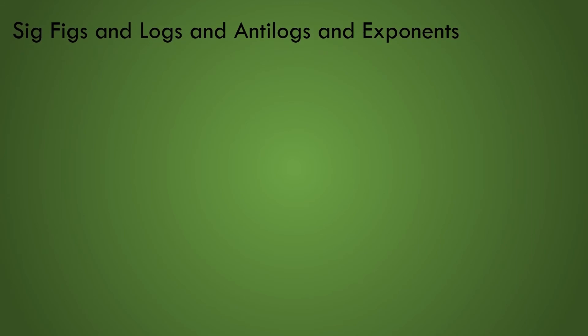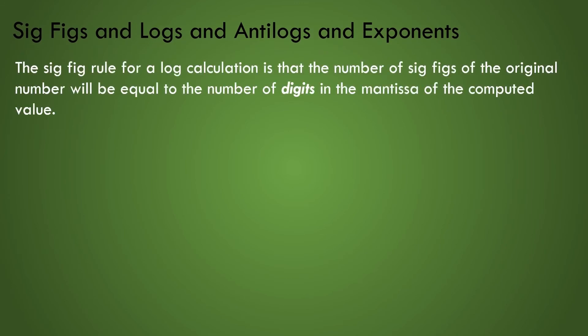The sig fig math rules for logs or antilogs are as follows. The sig fig rule for a log calculation is that the number of sig figs of the original number will determine the number of digits of the mantissa of the computed value. So most of the time you end up with a value that looks like it has one more sig fig than the value you started with. The reason for this is that the characteristic is assumed to be an exact value.